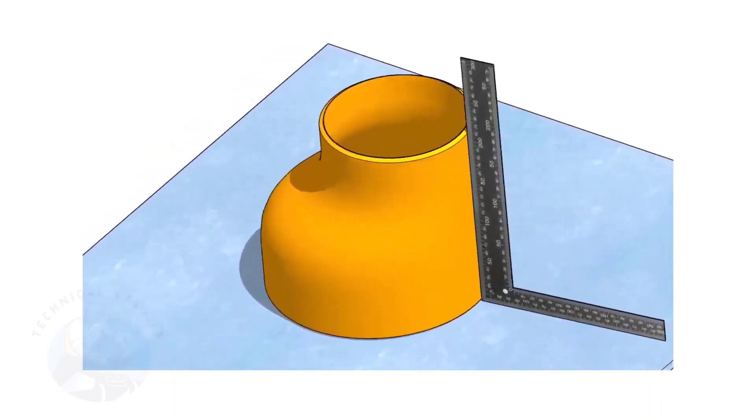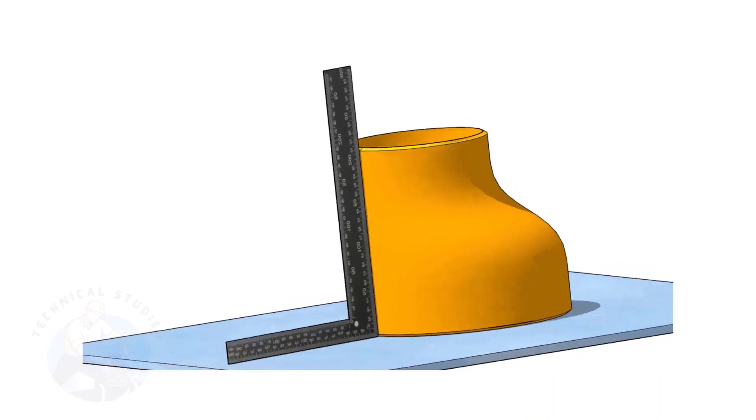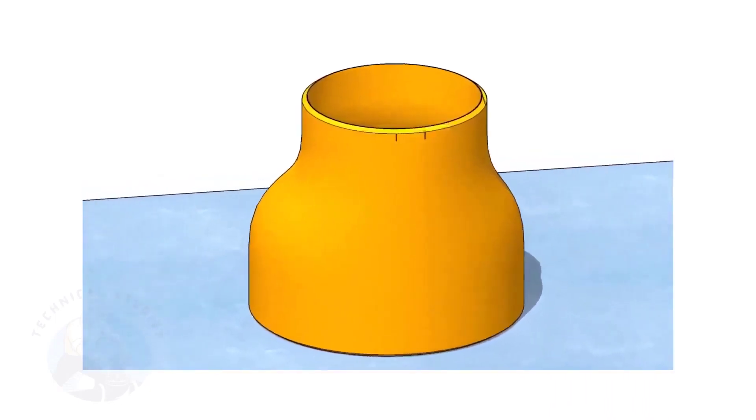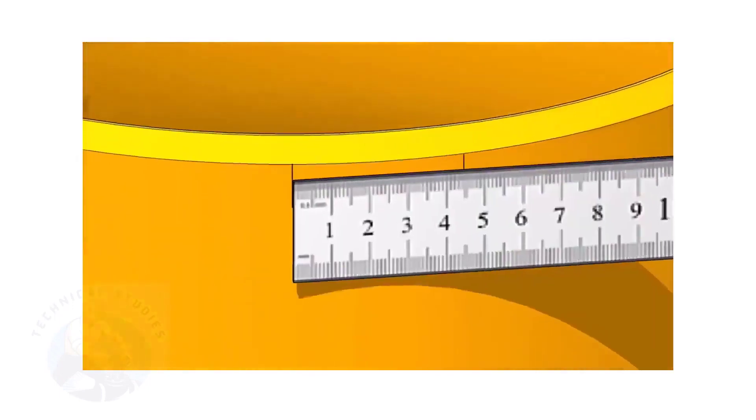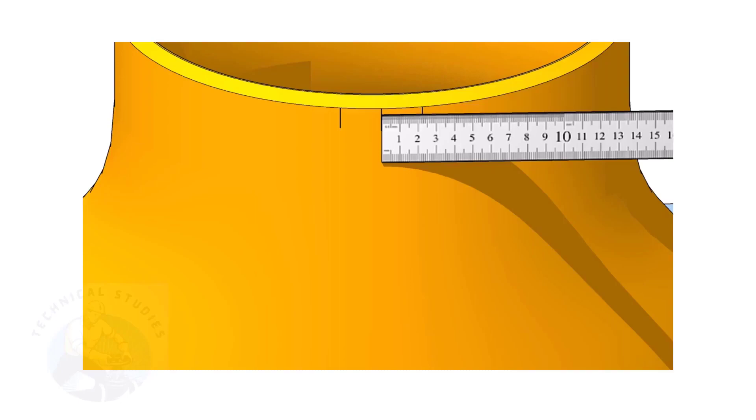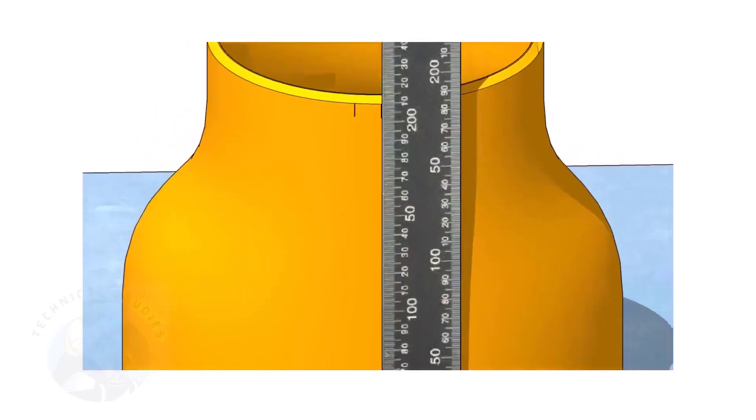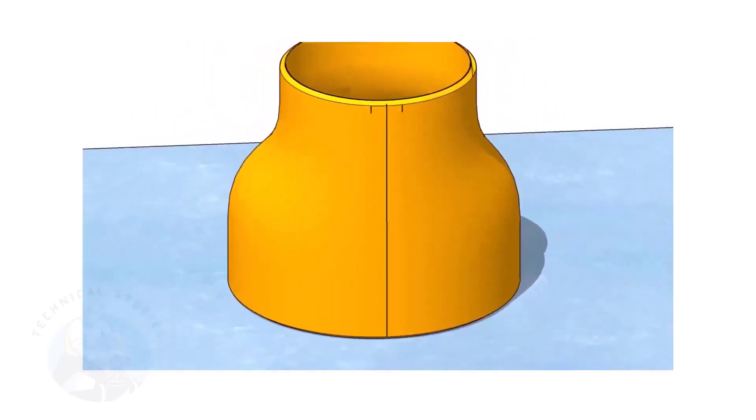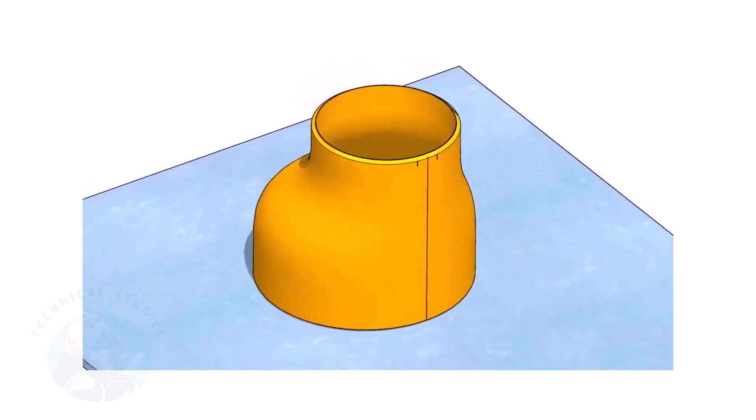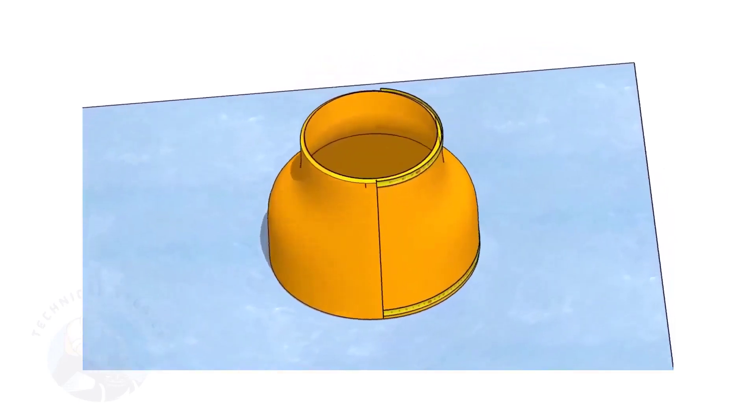It is a good practice marking the center lines of the fittings before starting the fit up, especially an eccentric reducer. I have already posted videos on how to mark the center lines of an eccentric reducer in different methods. In this video, I will show you the method of fitting an eccentric reducer to a pipe that is already fitted to a flange. But this method is applicable for all the fittings.